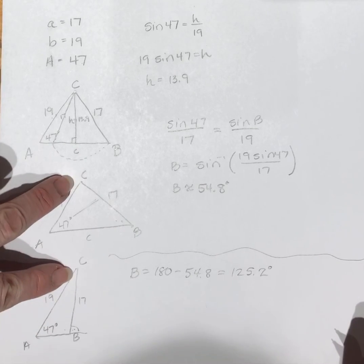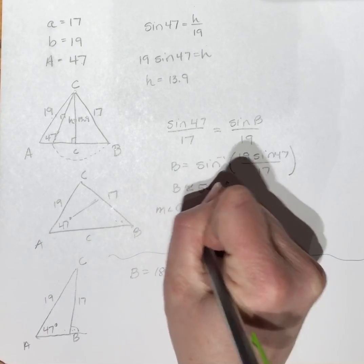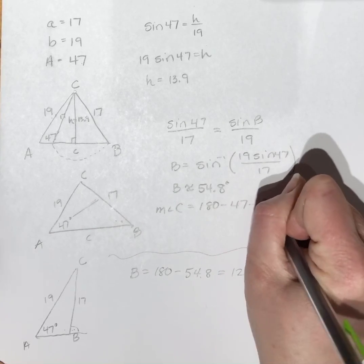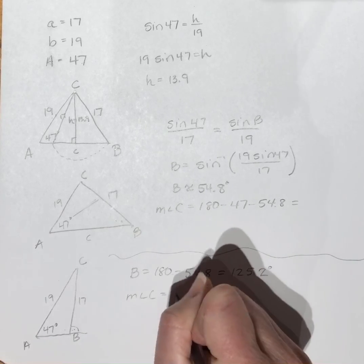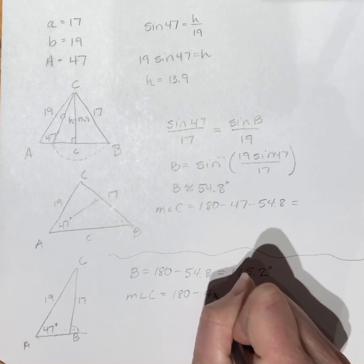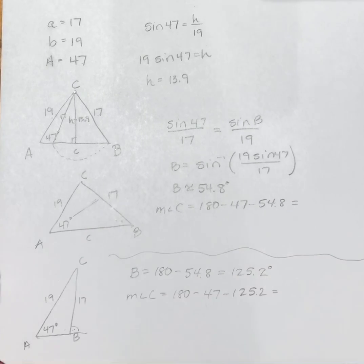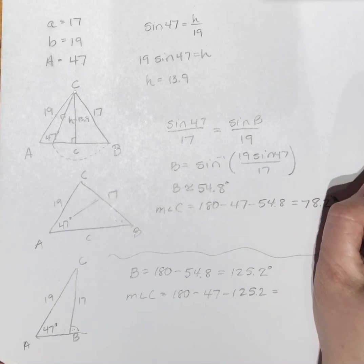So once I've got my two angle B's, I can then find my other third angle on both of them. So measure of angle C is going to equal 180 minus 47 minus 54.8, and this angle C will be 180 minus 47 minus 125.2. So this one is 78.2 degrees.